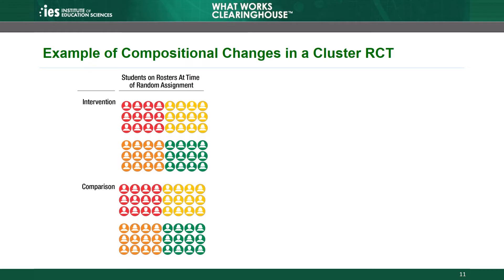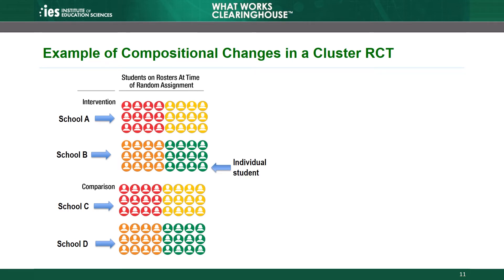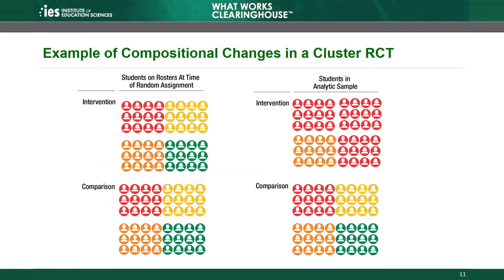Let's look at an example in more detail. This animation illustrates the concepts of stayers and joiners in a cluster study. In this example, schools were randomly assigned so that the intervention and comparison conditions each include two schools. The schools are the clusters, represented by groups of student figures, and the students within each school are the individuals. The figures are different colors, representing different baseline characteristics like pre-intervention achievement levels. The students on rosters at the time of random assignment, shown on the left, are similar in the intervention and comparison groups. However, the students actually analyzed within each condition, shown on the right, are not similar.